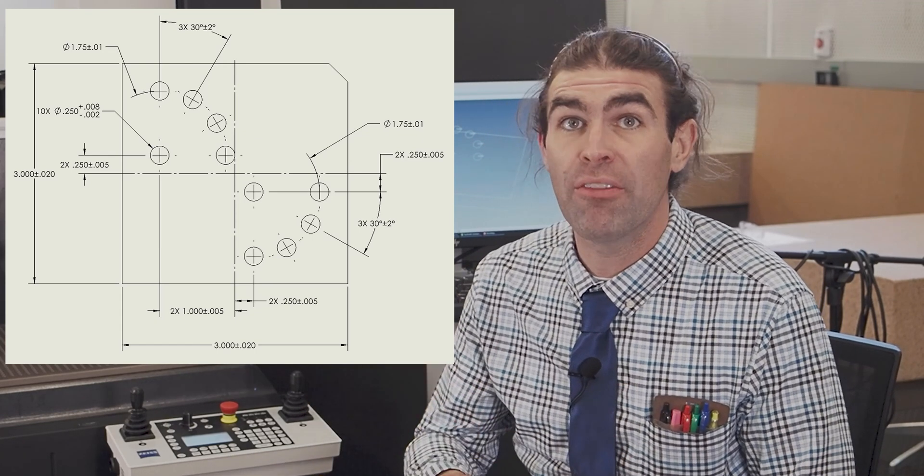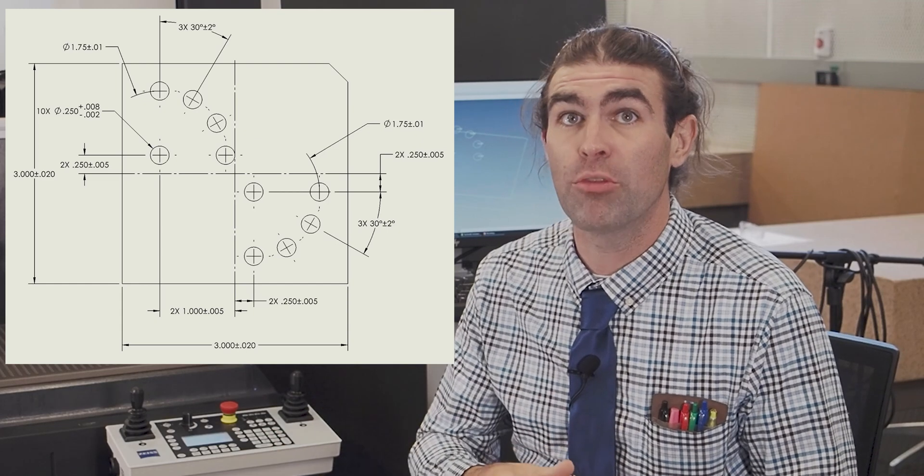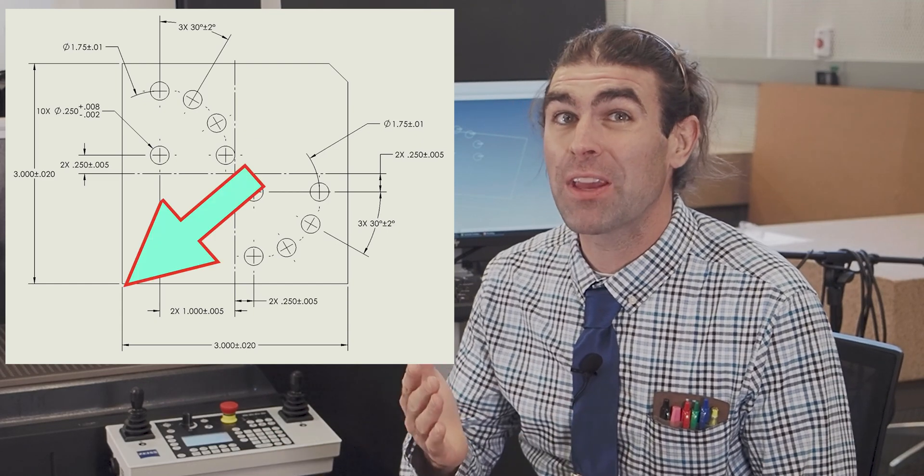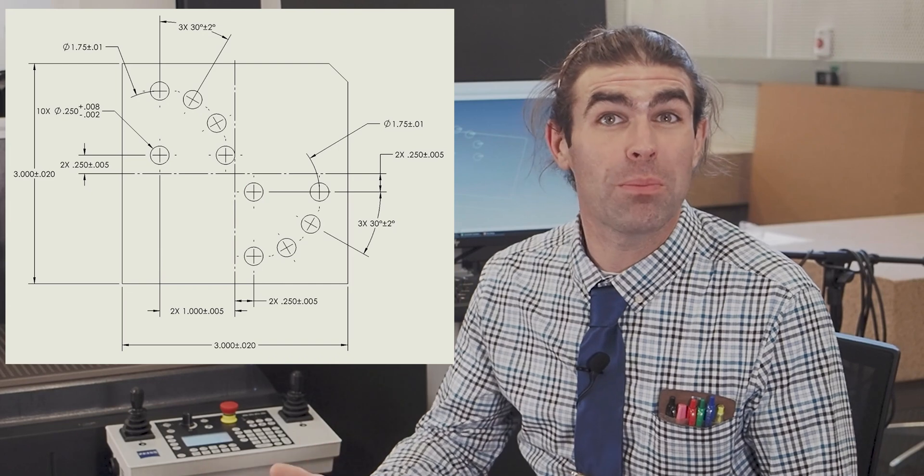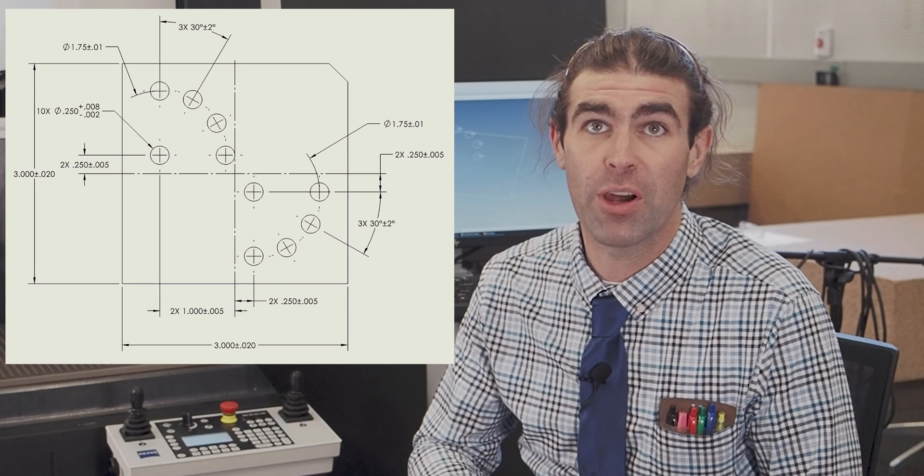You'll see on the drawing here that the big change in the part is the dimensioning scheme. Instead of having all of the dimensions come from that bottom left corner, now we've got two center lines going through the middle of the part where all of our dimensions come from.